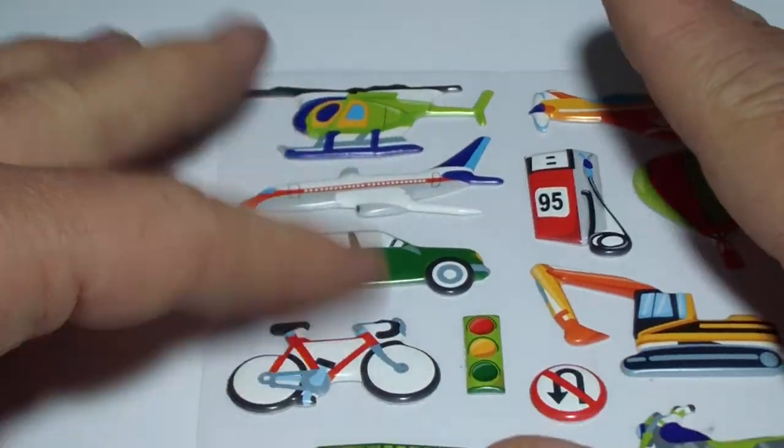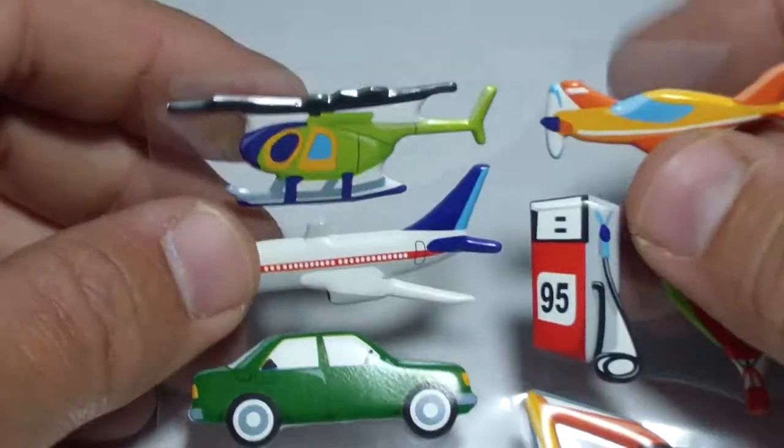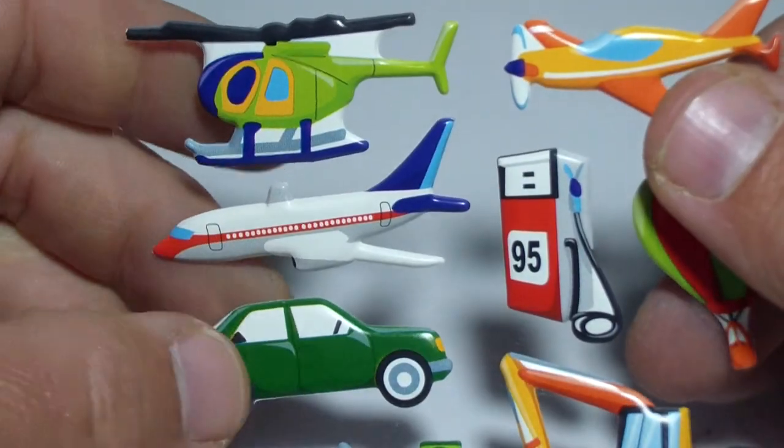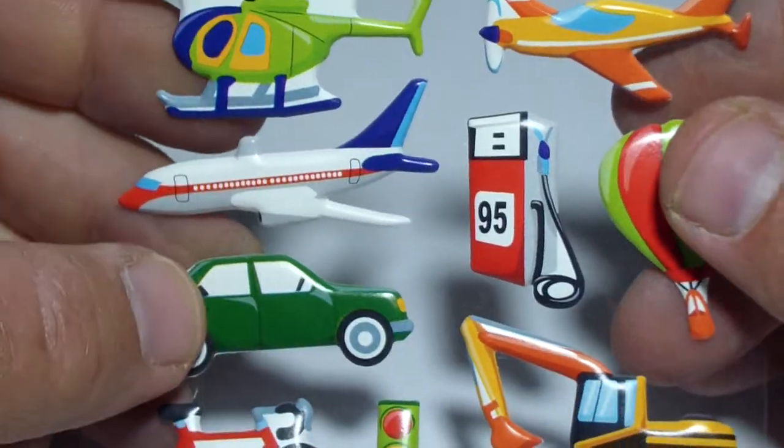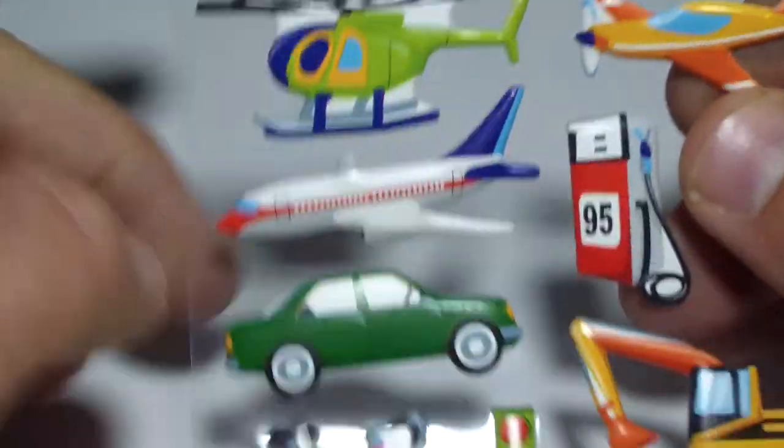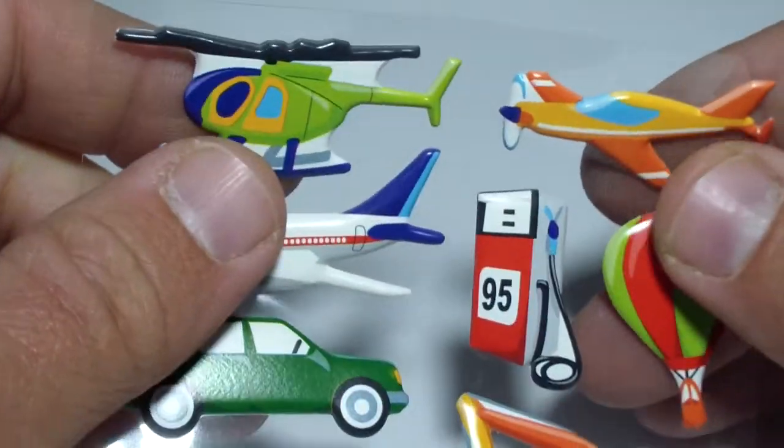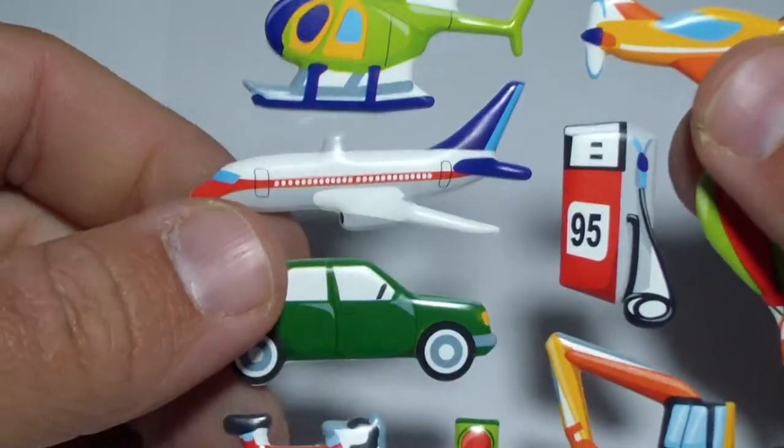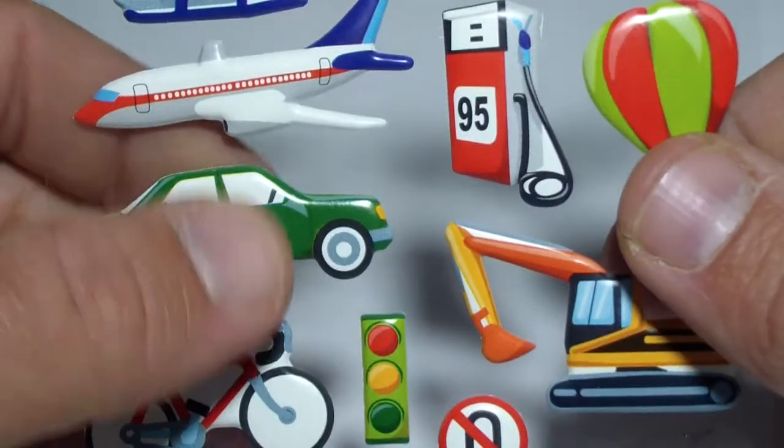Wow kids, glad to see you here! This time we have a beautiful set of transportation and vehicle stickers. You can see here that we have an airplane, a helicopter, another airplane, a big one.